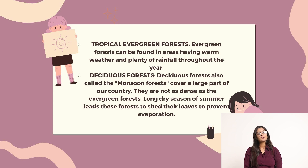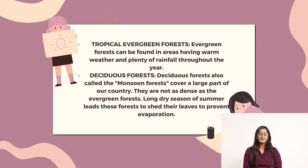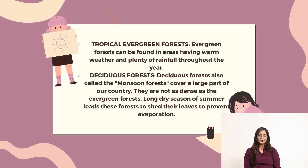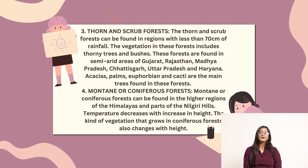Deciduous forest, also called the monsoon forest, covers a large part of India. The long dry season of summer leads these forests to shed their leaves to prevent evaporation.